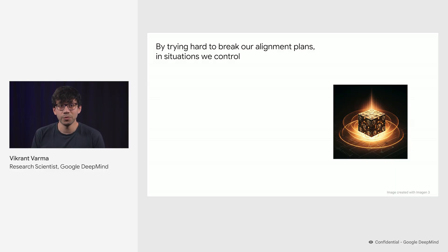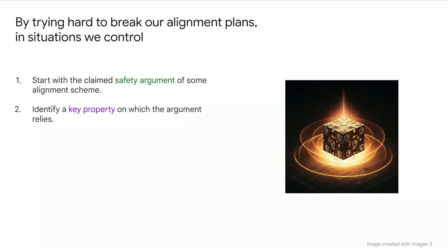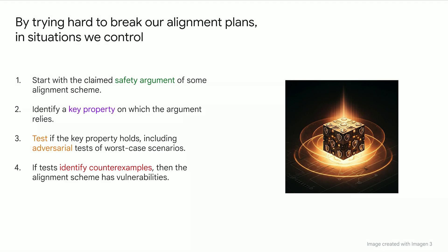How do we do this? Fundamentally, we do it by trying hard to break our alignment plans, but in situations that we control. We start with the safety property of some alignment scheme, then we identify a key property on which this argument relies. We test if the key property holds, including adversarial tests of worst-case scenarios. And if these tests identify counterexamples, then we know that our alignment scheme has vulnerabilities.